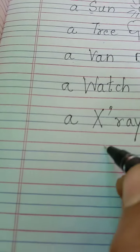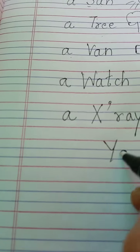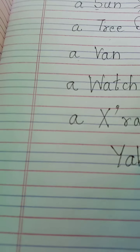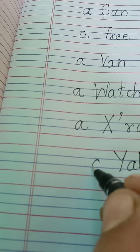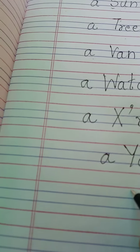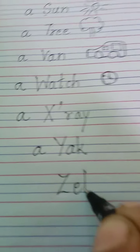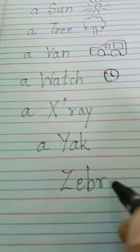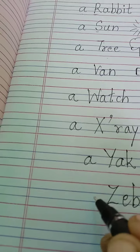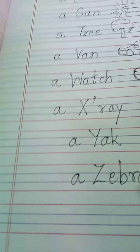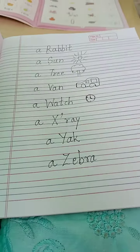Y. Yak — Y, A, K — yak. A yak. Zebra — Z, E, B, R, A — zebra. A zebra.